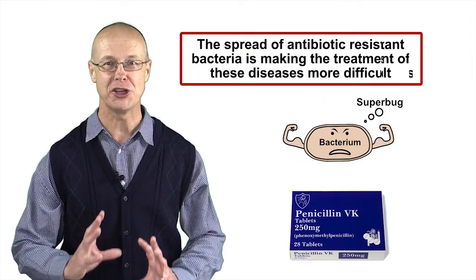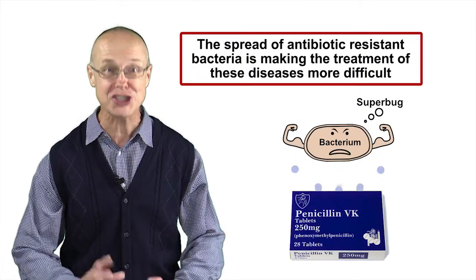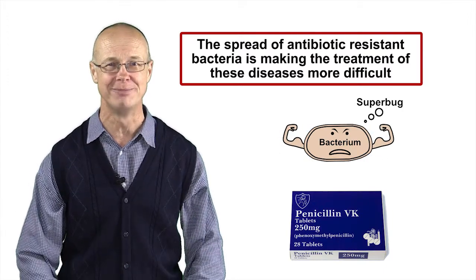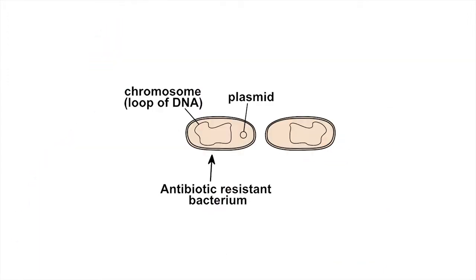However, the spread of antibiotic-resistant strains of bacteria has made this job much harder. Part of the trouble is that some bacteria contain additional short loops of DNA called plasmids that allow the bacteria to make proteins that protect them from an antibiotic. These bacteria can share this plasmid with other bacteria, passing on antibiotic resistance to them.